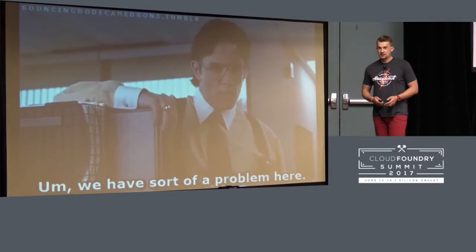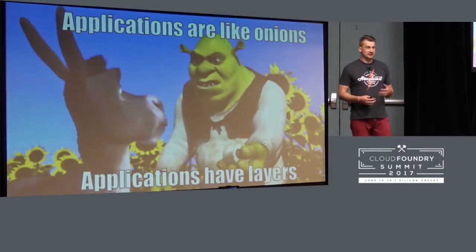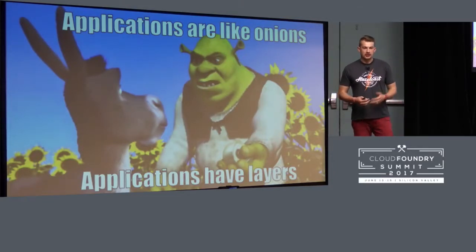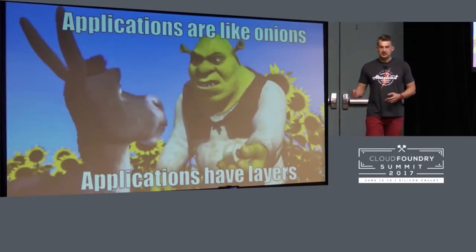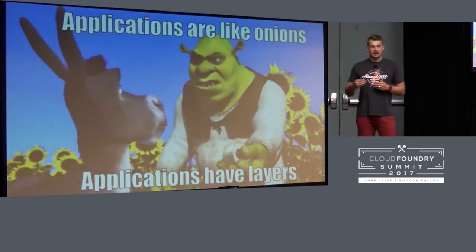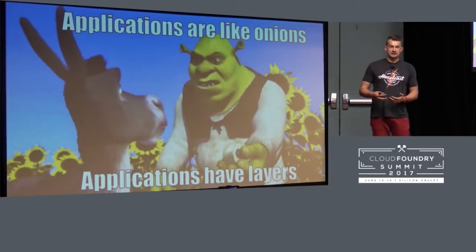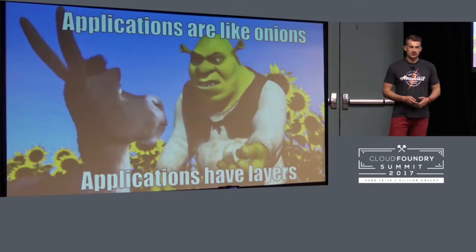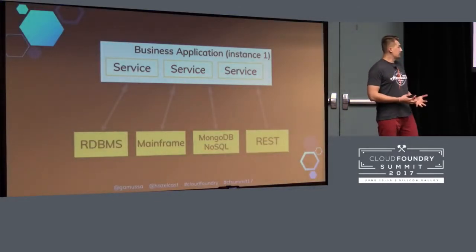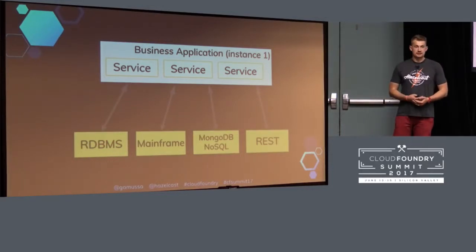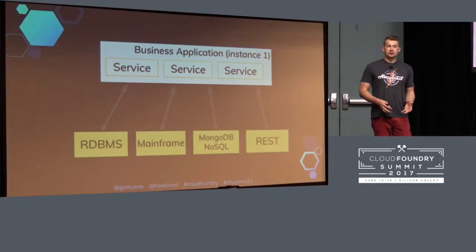What kind of problems do we have? A typical enterprise application contains multiple layers — UI, business logic, data access layer, middleware, and integration with other systems like messaging. Across these many layers we keep increasing the latency of the application, so from one level of abstraction to another the application may slow down.